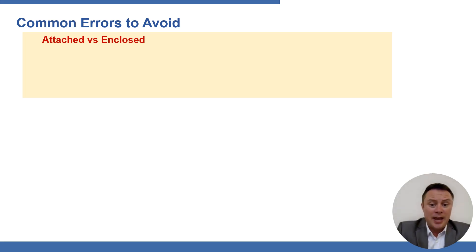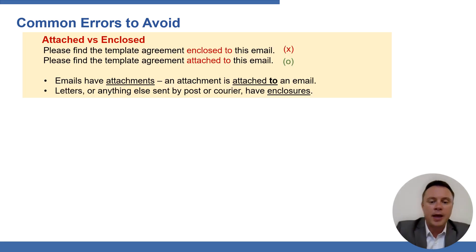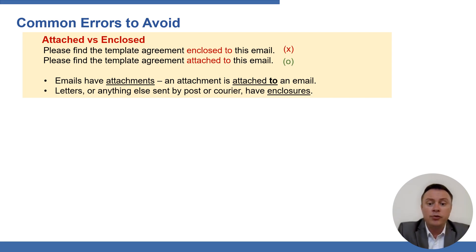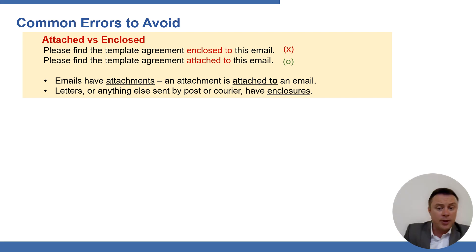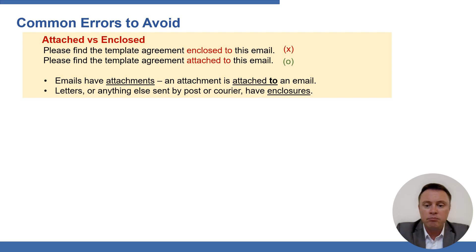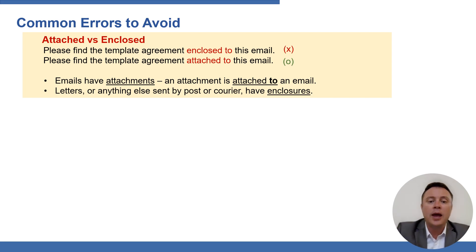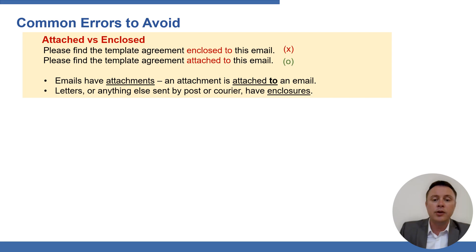Attached versus enclosed: anything inside something else when sent physically is 'enclosed' — for example, putting money in a Christmas card. When attaching a document to an email, however many documents, it is always 'attached.' So: 'Please find the template agreement attached to this email.' Letters or items sent by post or courier are 'enclosed'; anything digital is 'attached.'